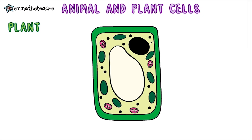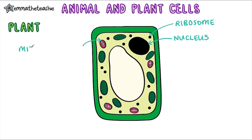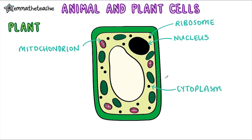Ready? So the big black blob is the nucleus — that's the same as in the animal cell. We've also got the little tiny black blobs, which are the ribosomes. Over here we have the squiggly guy, which is a mitochondrion. And we've also got our liquid gel, which is the cytoplasm. We have the cell membrane, and that is the inner layer of the two layers that you can see. I'll go over how you remember that a little bit later.